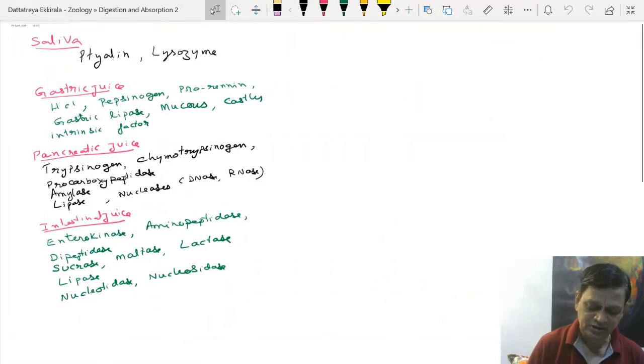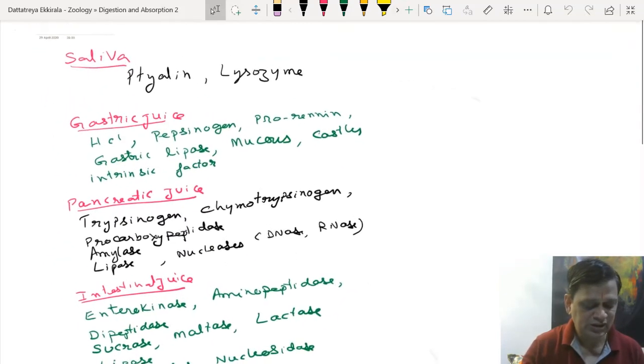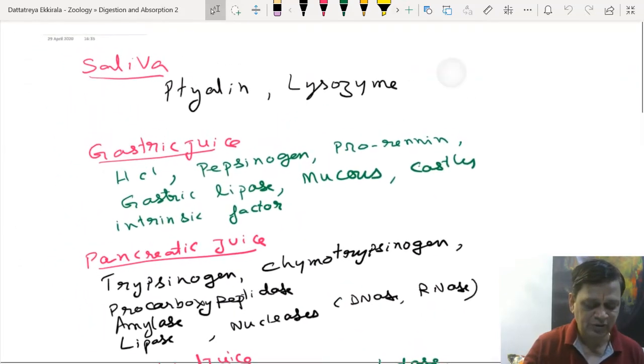Digestion is mechanical and chemical breakdown. Mechanical breakdown is by teeth and muscle action, whereas by enzymatic action there is chemical breakdown. There are two types of breakdown. Now, various digestive enzymes help us in the process of digestion.